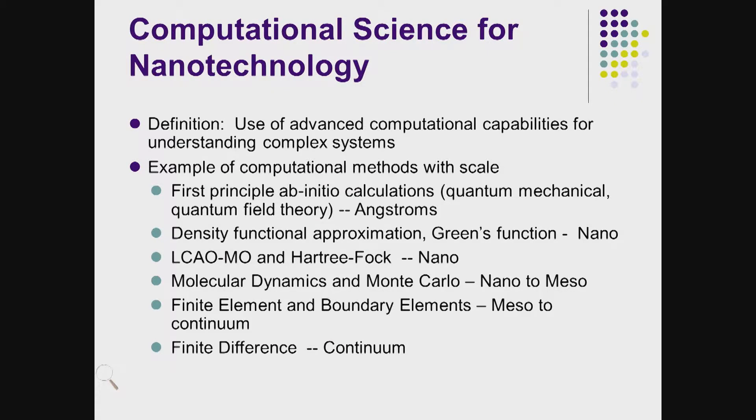We can approximate the density of electronic interaction between different orbitals of atoms to go to larger scales — that is called density functional theory (DFT). Using DFT, we move from angstrom scale (10⁻¹⁰ m) to nanoscale (10⁻⁸ m), going from 1–100 angstroms up to 10,000 angstrom scale.